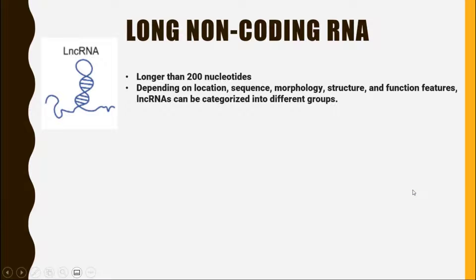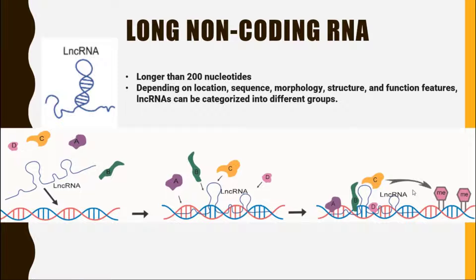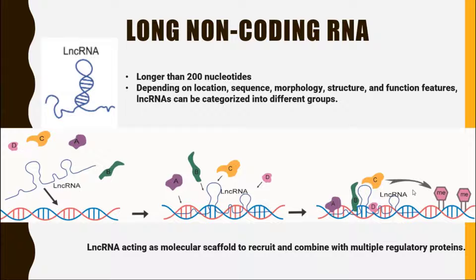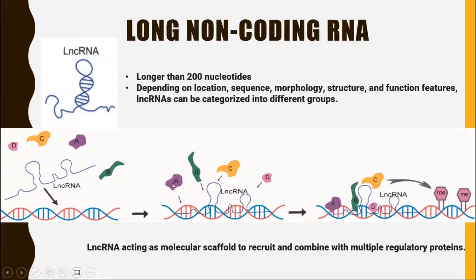The second most common function of long non-coding RNA is that it can act as a molecular scaffold and recruit and combine multiple regulatory proteins. This is the DNA double helix structure and this blue line is representing long non-coding RNA. This long non-coding RNA attaches itself to this DNA and provides a platform for all other proteins to get attached with it.